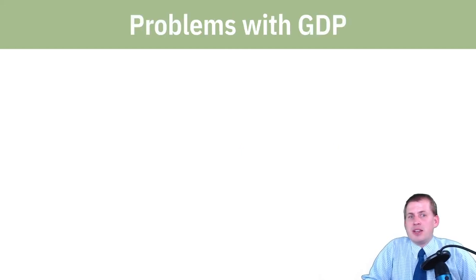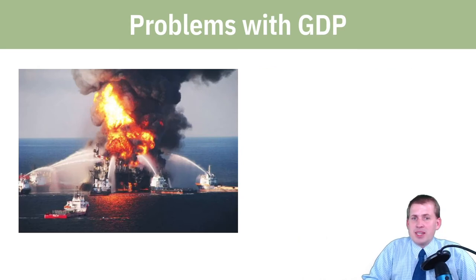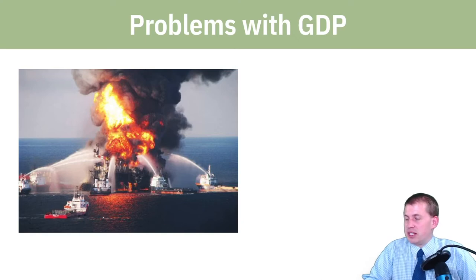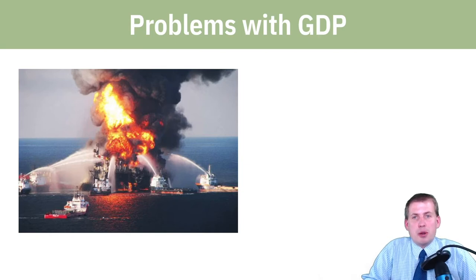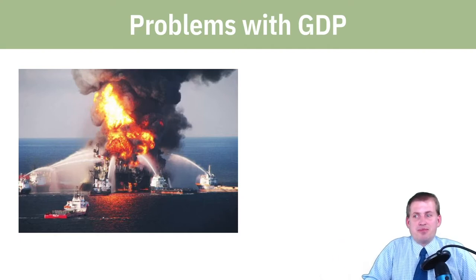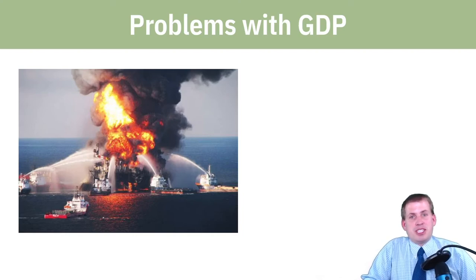There are all sorts of problems with GDP. For example, this is the Deepwater Horizon oil spill from 2010 in the Gulf of Mexico — BP's oil rig exploded, causing enormous environmental damage throughout the Gulf Coast region. The government had to spend lots of money to clean it up, and all of those expenditures counted as GDP. So the Deepwater Horizon tragedy actually boosted GDP because the government was spending money.